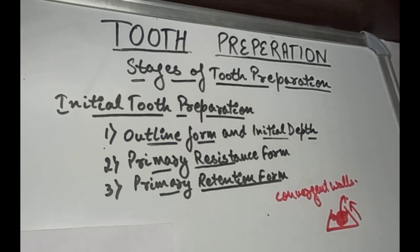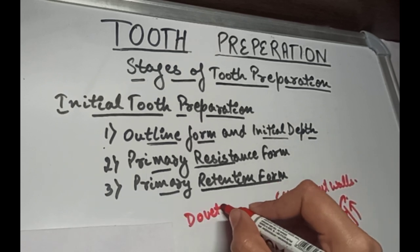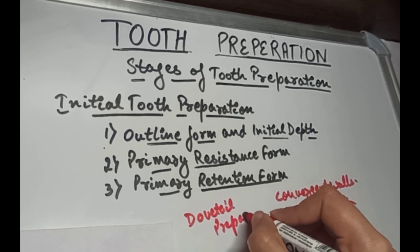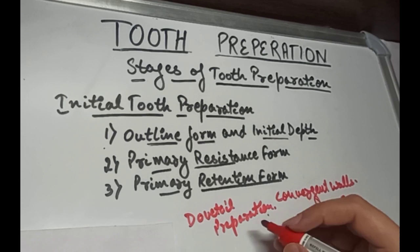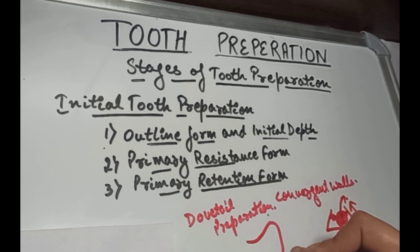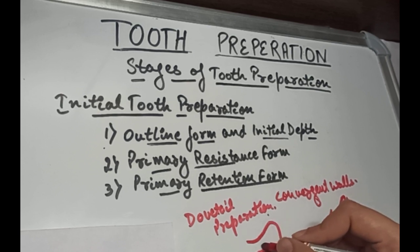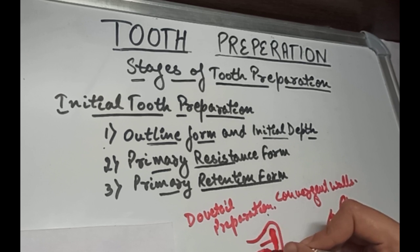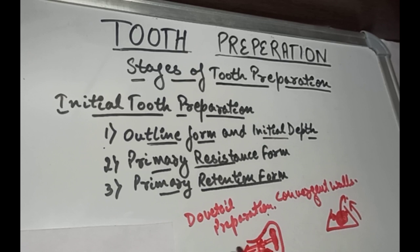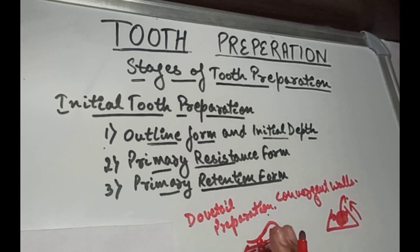The next feature for the retention form is the dovetail preparation. The dovetail preparation prevents proximal displacement — the restorative material gets locked because of this kind of preparation, preventing dislodgement in the proximal direction. If you are using composite, you can rely on the bonding agent, but for amalgam, these retentive features are very essential.